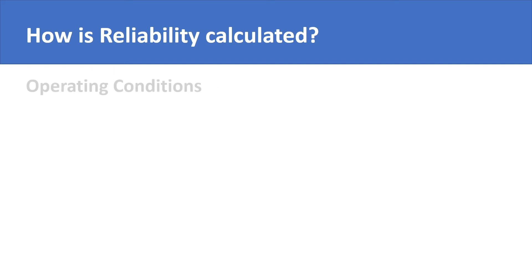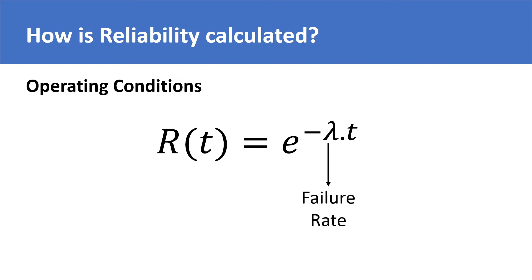An important thing to remember when using the formula of reliability is about the operating conditions. When calculating the failure rate, always remember to use historical data of machines with same or similar operating conditions. In the example of our pump, don't plug in the failure rate of a pump that maybe handles a different fluid, because then the operating conditions are not same.